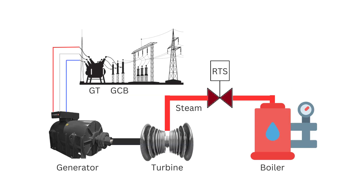The consequences of this reversal depend on the type of prime mover. For example, in steam turbines, the motoring power typically ranges from 0.5% to 3% of the generator's rated power. During motoring, turbine windage loss increases, leading to potential damage to the turbine blades.